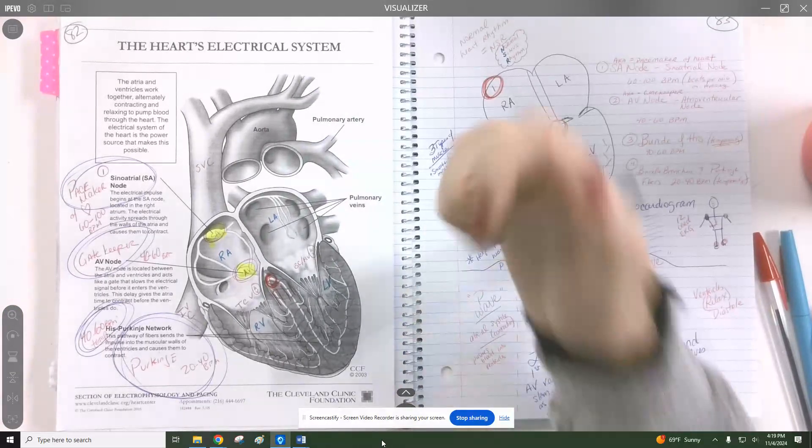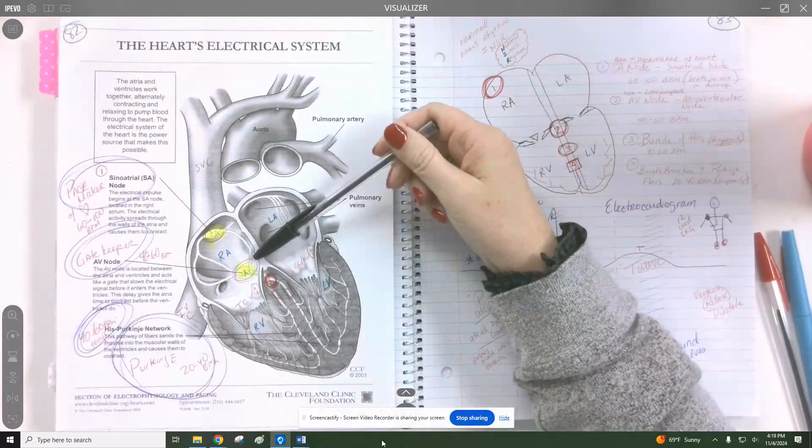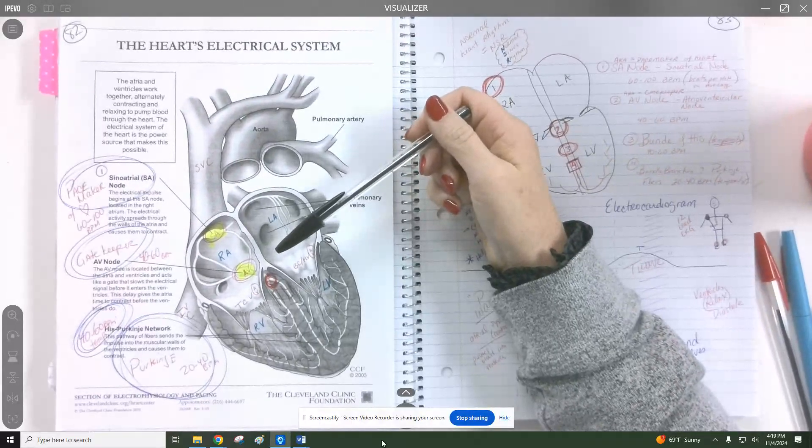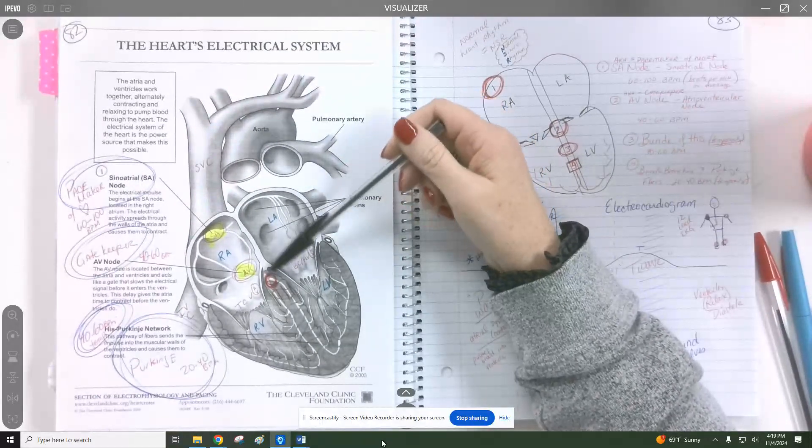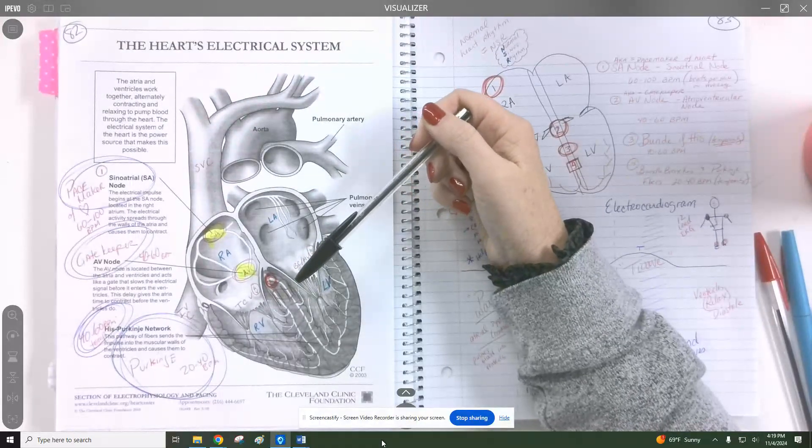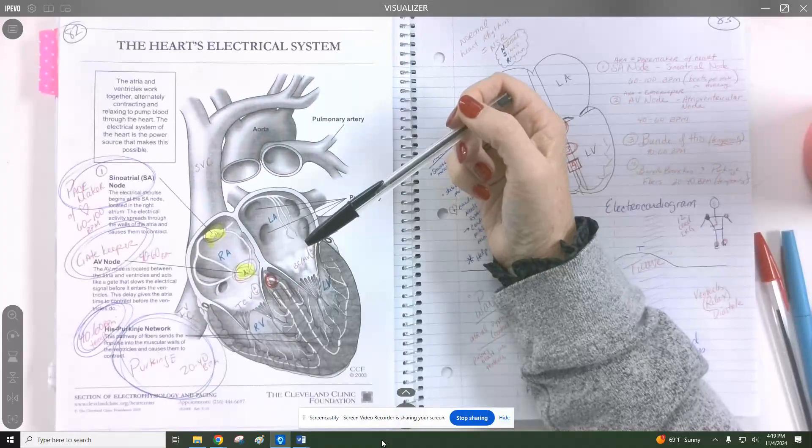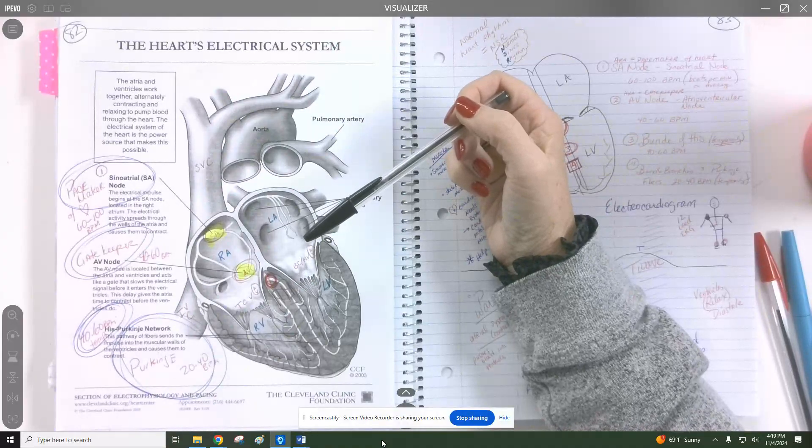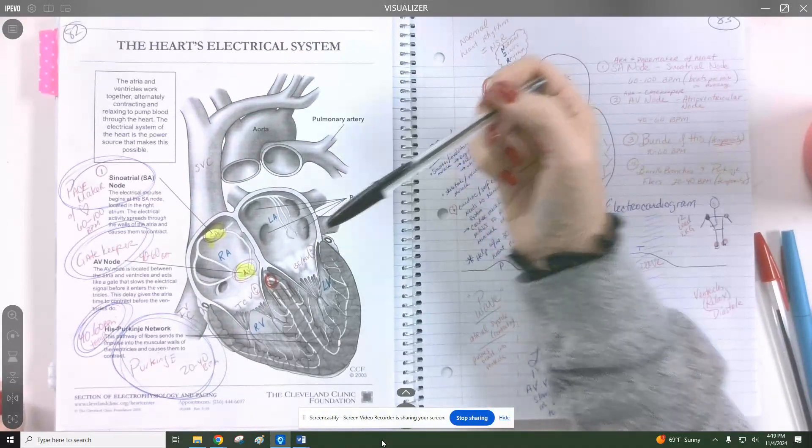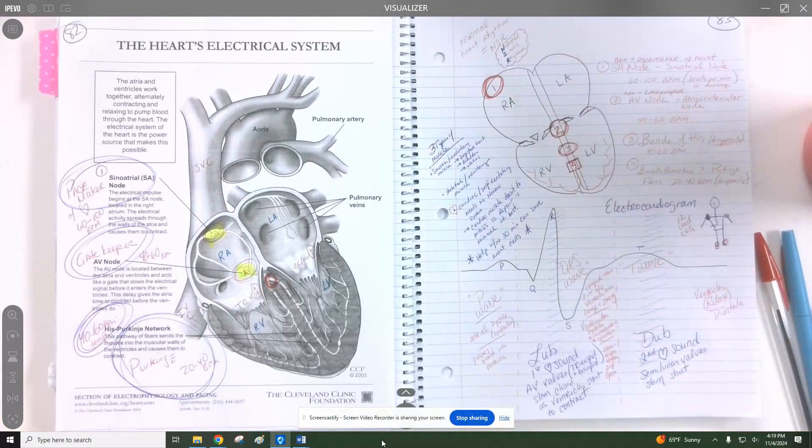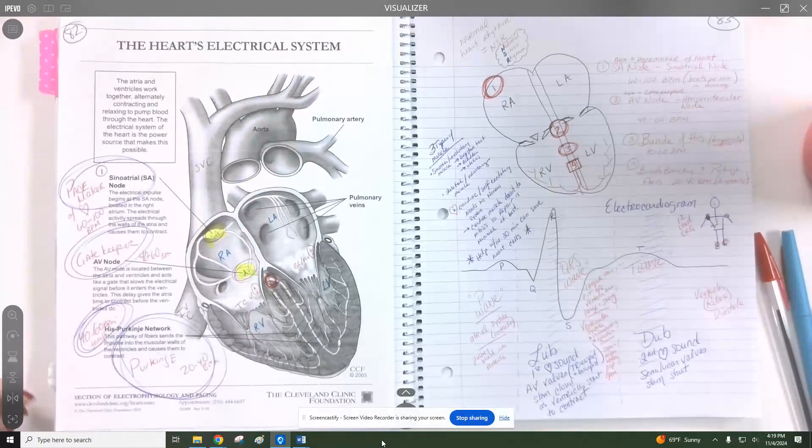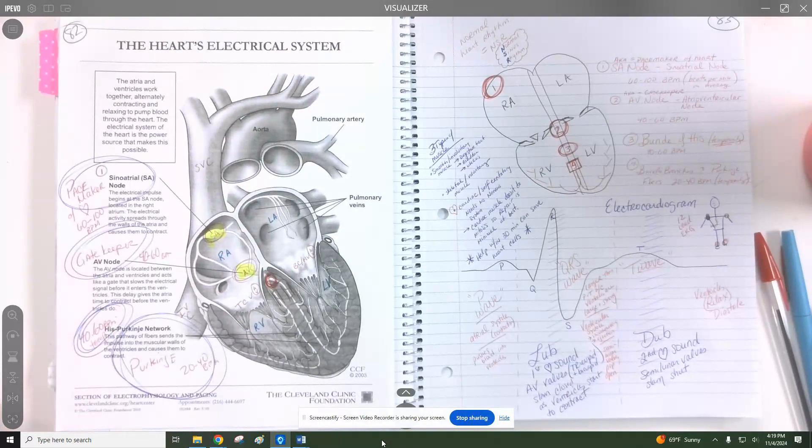Then if we do have faulty SA or AV nodes, then we can depend on the bundle branches. So the bundle of Hiss and then the bundle branches can actually trigger and fire ventricular contraction on their own. They, however, are not going to do it for long term. They are great for temporary support. Your bundle of Hiss can take you through a 40 to 60 beat per minute temporary period of time. So it's multiple days typically.